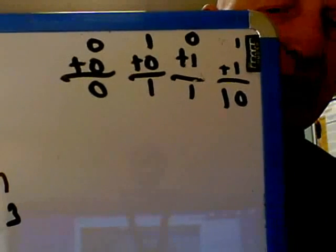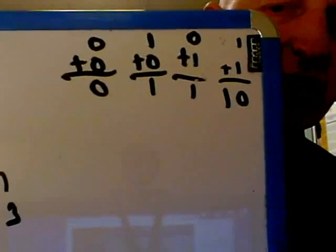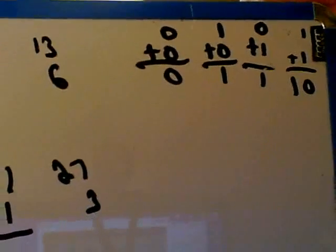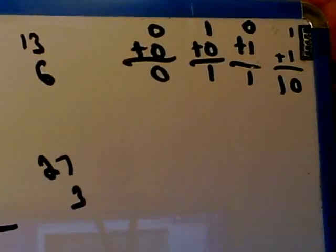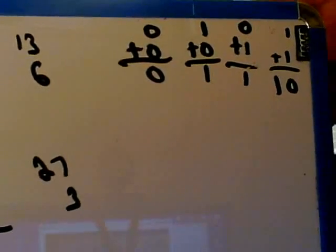A 0 plus 0 in binary is 0, and 1 plus 0 in binary is 1. 0 plus 1 in binary is 1, and 1 plus 1 is a 0, carry the 1, and it becomes 10.